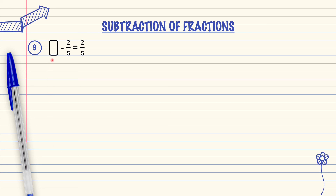Question number 9: blank box minus 2 over 5 equals 2 over 5. We will find the fraction in the blank box. If the box is at the front, we add the numerators 2 and 2.